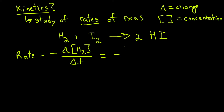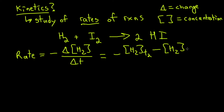For example, we're going to have the negative concentration of hydrogen at the second time point. Let's say we start the reaction at zero seconds and then measure the concentration at 10 seconds. In that case, T₂ is the 10 seconds minus the concentration that was initially there, which is T₁ at time zero. Then we take final time minus initial time.